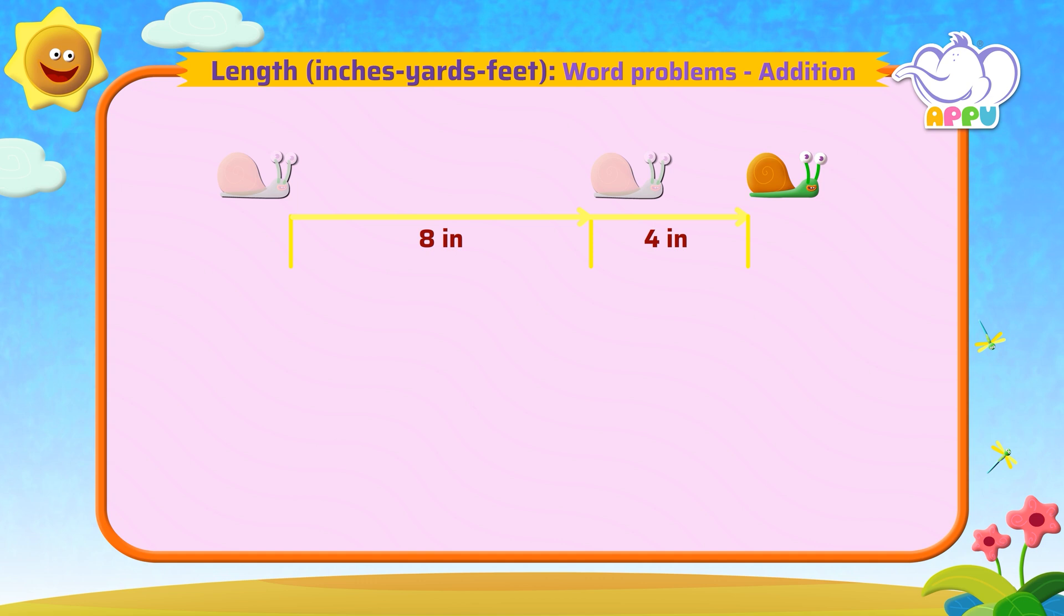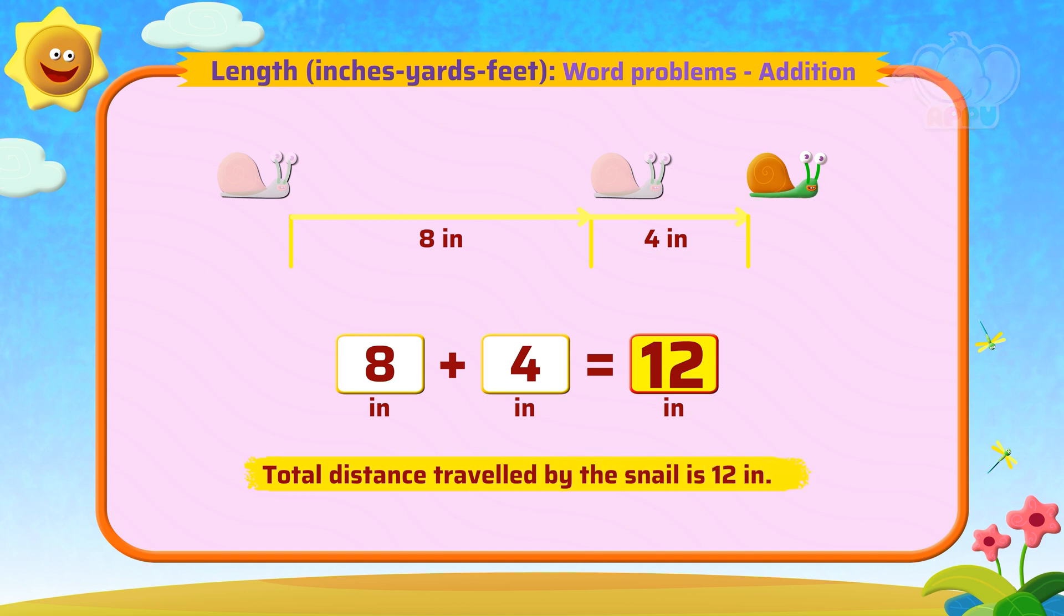To find the total distance traveled by the snail, we add each of the distances. 8 inches plus 4 is equal to 12 inches. So the total distance traveled by the snail is 12 inches.